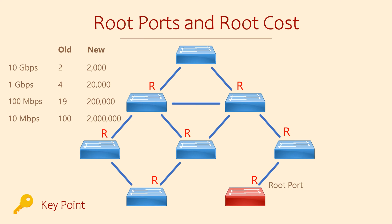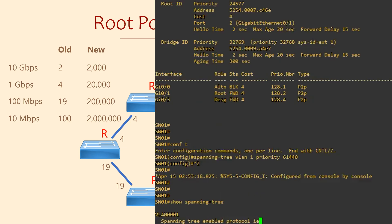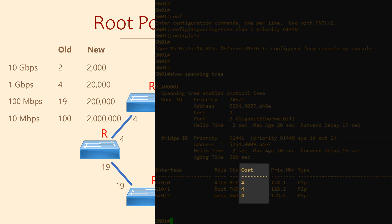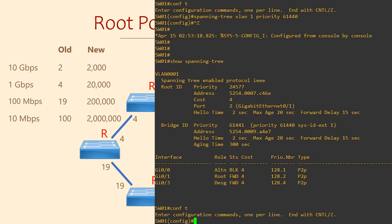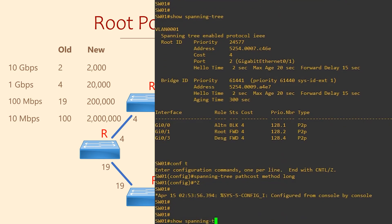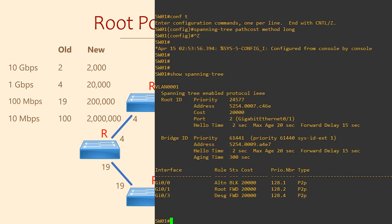Spanning tree will assign a cost to every interface. We've used small values in the topology here to keep things simple. If we use 'show spanning tree' again, we can see the cost on each interface. Notice that these are gigabit interfaces and the cost is 4 — there's not much room to get a smaller cost for faster interfaces. We can change the path cost method to long using the 'spanning tree path cost method long' command in configuration mode. When we look at the costs again, they're much bigger, but that doesn't mean they're worse — they're just calculated differently.